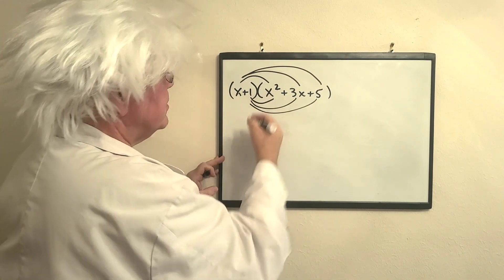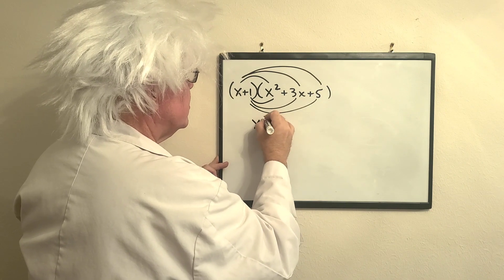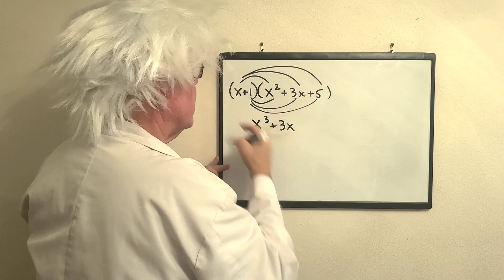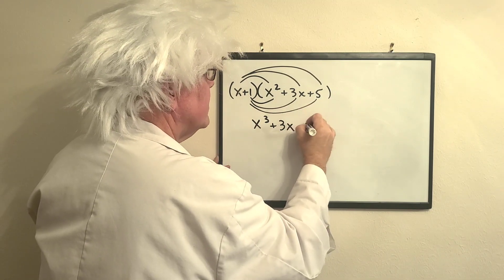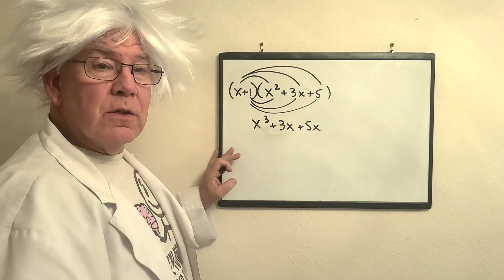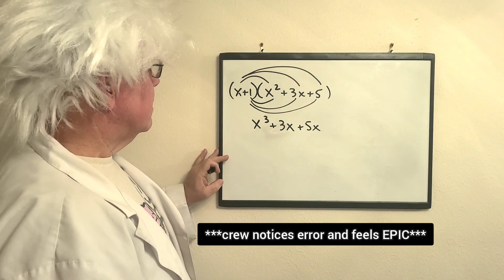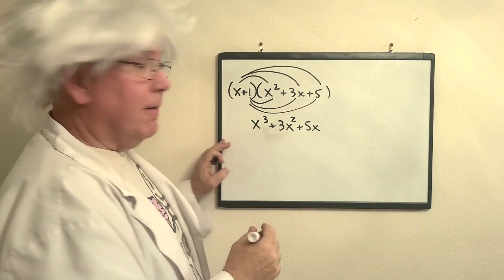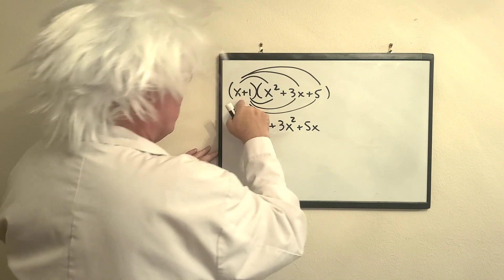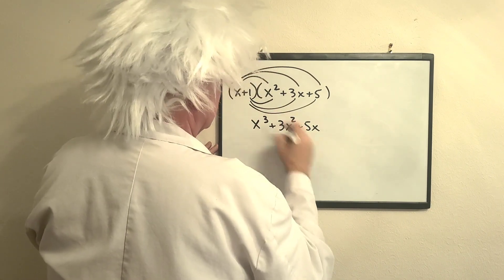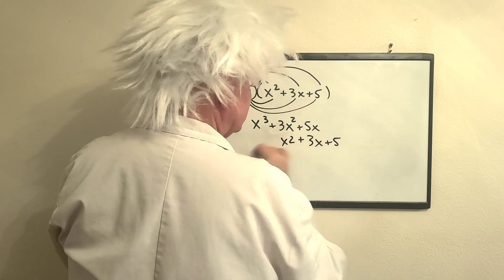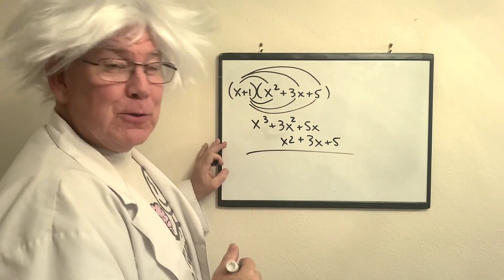So x times x squared is x to 1 plus 2, or x cubed. x times 3x is 3x squared, and x times 5 is 5x. Excuse me, my bad. 1 times x squared is x squared, 1 times 3x is 3x, 1 times 5 is 5. It's nice to have people on your side, that's all I'm saying.